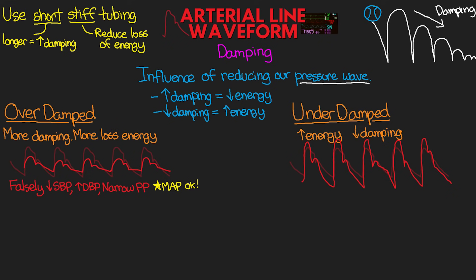The result of underdamping is that we're going to see a falsely high systolic blood pressure and falsely lowered diastolic blood pressure. The added energy causes the waveform to oscillate more, which is why we see this happen, giving us a larger pulse pressure. Again, there can be several causes of this which I will discuss in the next lesson, and again this can lead to improper clinical decision making. But fortunately, the MAP will generally remain accurate.